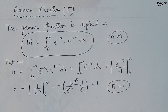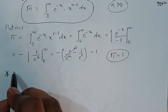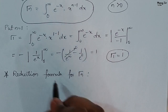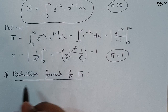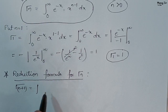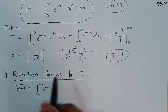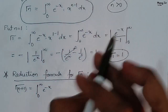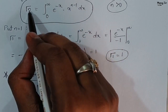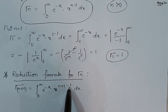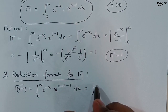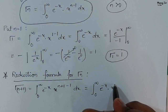Now we will see the reduction formula for the gamma function. We will find Gamma(n+1) by putting n equals n+1 in the general formula. So Gamma(n+1) equals the integration from 0 to infinity of e to the power minus x into x to the power n+1 minus 1, which simplifies to x to the power n, dx.